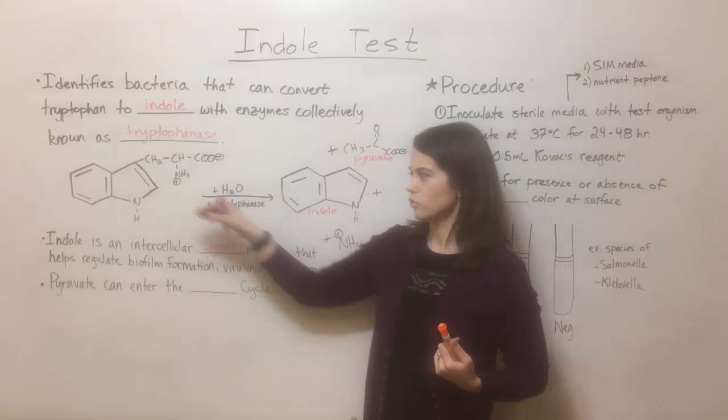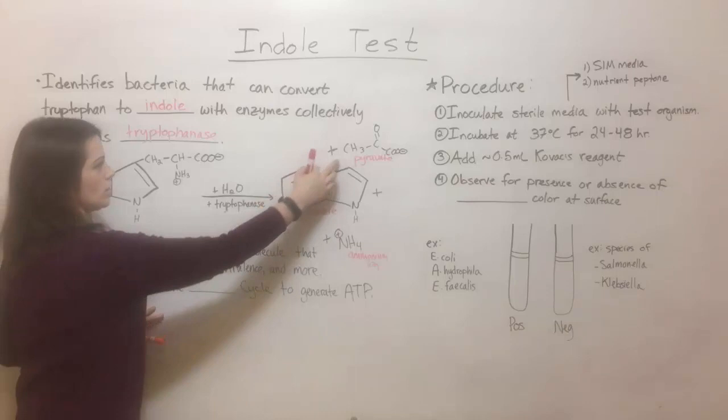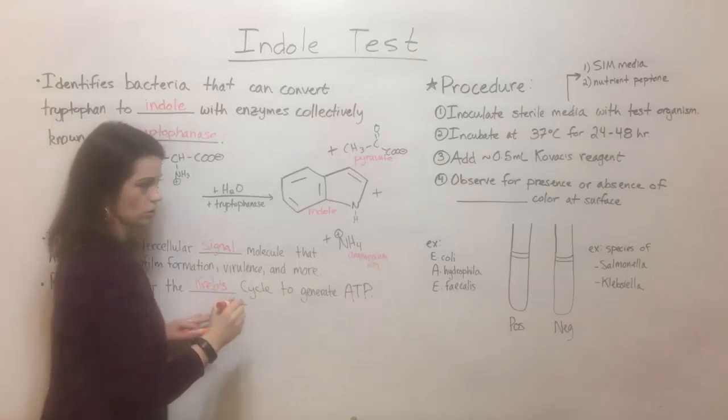Pyruvate, one of the other products here, you may have heard of pyruvate before as the end product of another process called glycolysis. So it turns out that making pyruvate this way means that it can feed directly into the Krebs cycle, also known as the citric acid cycle.